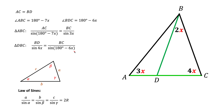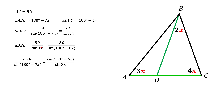We don't need the law of sines anymore. We're going to divide one equation by the other. Notice that all the lengths cancel out: on the right sides BC cancels with BC, and on the left, AC cancels with BD because AC equals BD. To get rid of the 180 degrees, we will use the formula sine of 180 minus z equals sine of z.